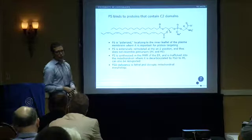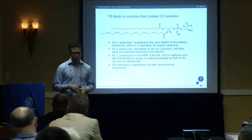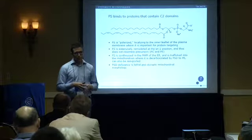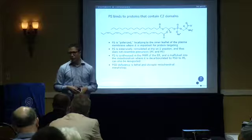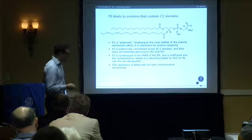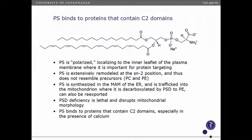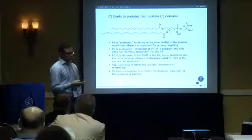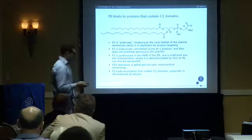Importantly, when you knock out phosphatidylserine decarboxylase in the mitochondria, you get embryonic lethality and mitochondrial morphological defects, suggesting this PE generation is quite important for function. PS also binds to C2 domain-containing proteins and is important in vesicle fusion to membranes, phospholipase activity, and generation of intracellular signaling metabolites.